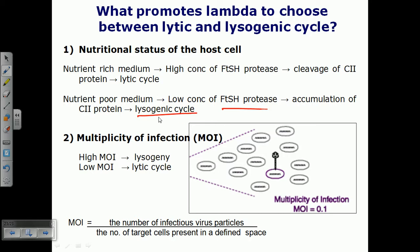The second factor is the multiplicity of infection. A high multiplicity of infection leads to the lysogenic cycle, while a low multiplicity of infection leads to the lytic cycle. The multiplicity of infection is defined as the number of infectious virus particles divided by the total number of target cells present in a defined space.